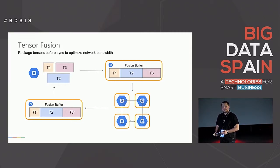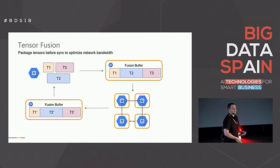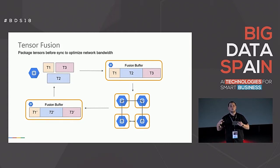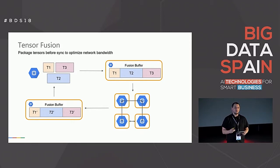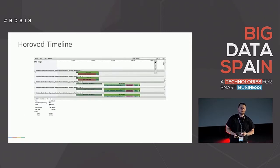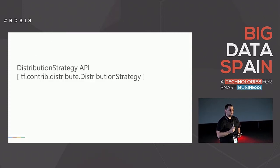Horovod also gives you Tensor Fusion — technology that combines small tensors together and sends them over the wire only when you have a full buffer, saving some traffic. It also has a special visualizer that helps you debug your distributed training more easily.